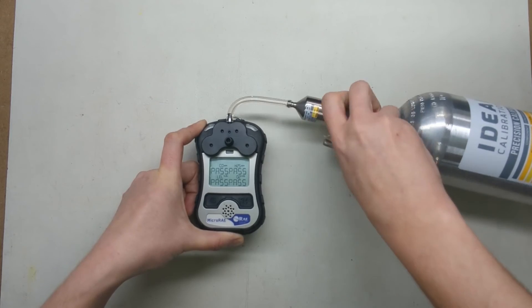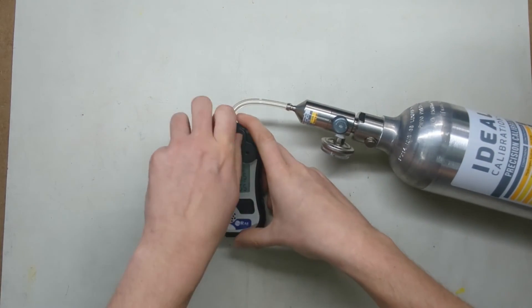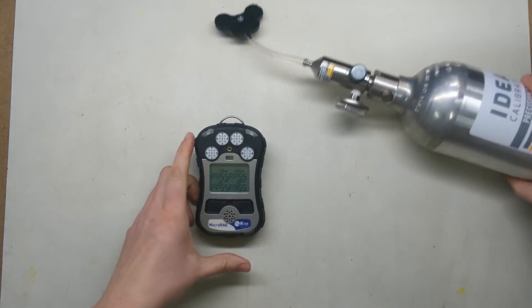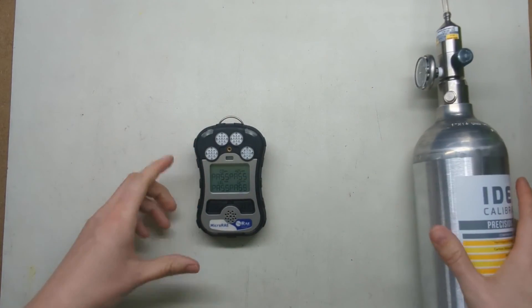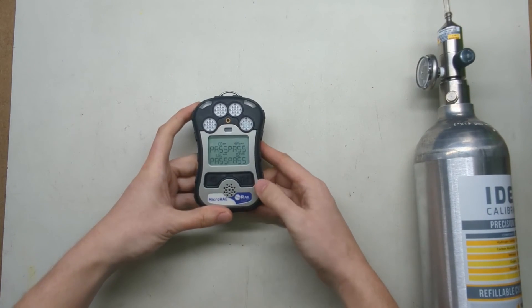We pass. Go ahead and cut the gas, unscrew the calibration adapter. You'll see the values are now starting to come down and it gives us pass across the board.